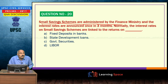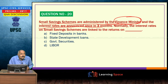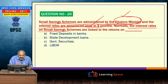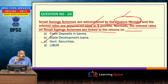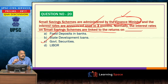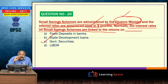Small savings schemes are administered by the Finance Ministry and interest rates are announced once every three months. Normally, the interest rates on small savings schemes are linked to the returns on government securities. The two schemes that currently enjoy the highest interest rates among small savings schemes are the Senior Citizen Savings Scheme and Sukanya Samruddhi Yojana.